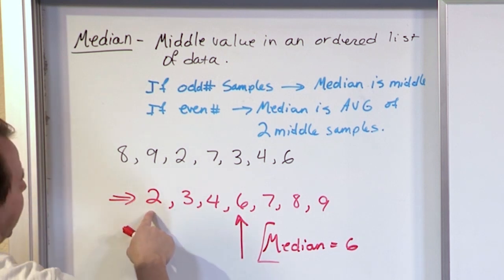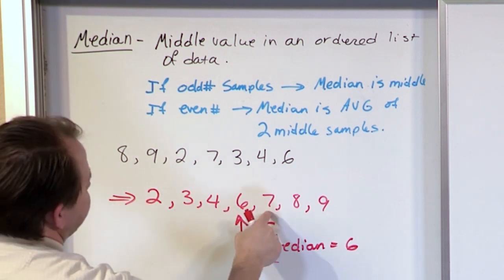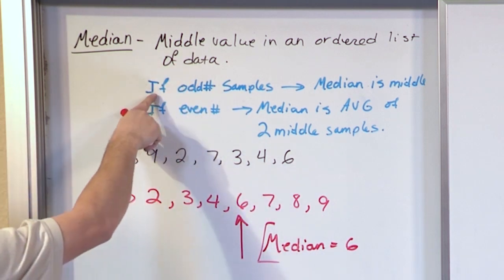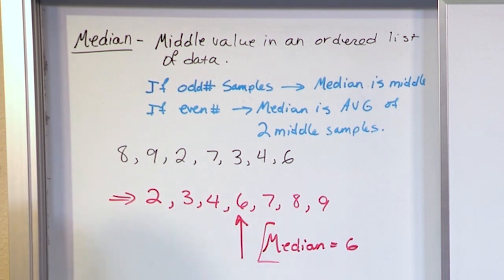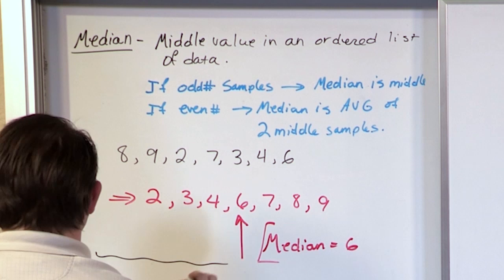Notice also, this is an odd number of data points. 1, 2, 3, 4, 5, 6, 7, which is what I was trying to say there. If it's an odd number of samples, the median is the middle, which is what that is. All right, what that is. Now let's go and find another one.